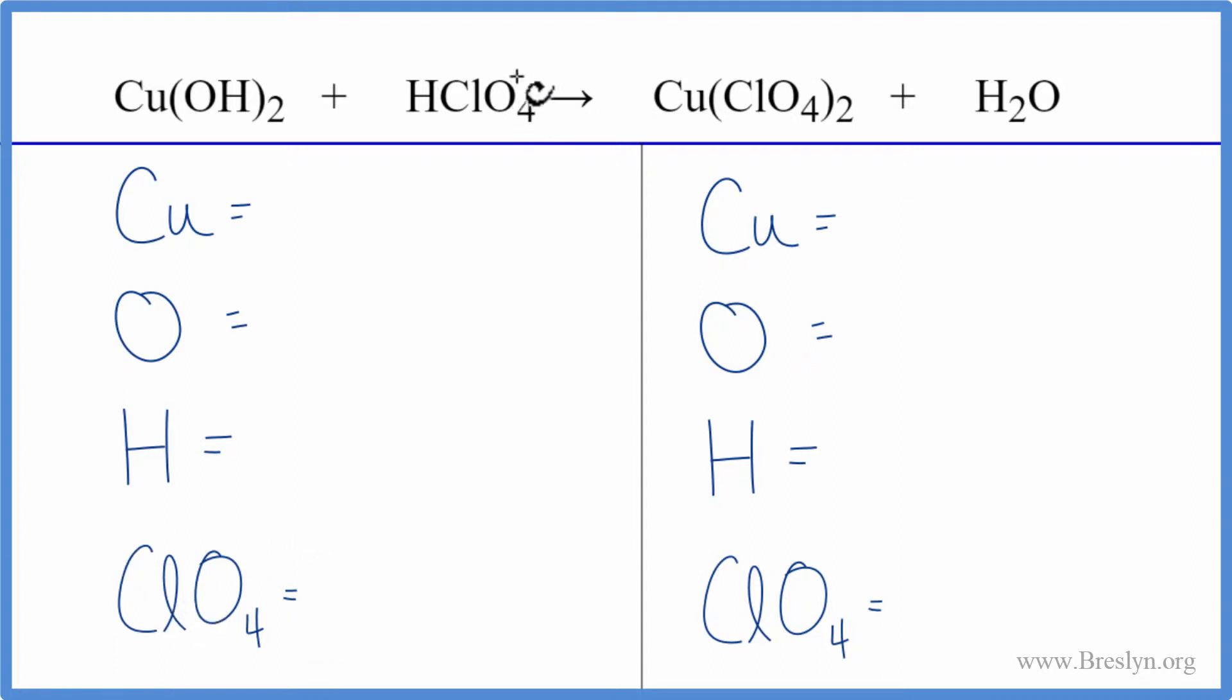Let's count the atoms up and balance the equation. We have one copper, one oxygen times two so two oxygens, hydrogens one times two, two hydrogens, plus we have the one hydrogen here so that gives us three, and then we have the perchlorate ion ClO4, we have one of these.